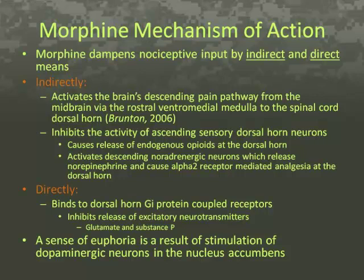Directly at the dorsal horn or the spinal cord, the binding of morphine to Gi protein coupled receptors inhibits the release of excitatory neurotransmitters, which are glutamate and substance P. In addition, a sense of euphoria experienced by the patient is a result of stimulation of dopaminergic neurons in the nucleus accumbens.